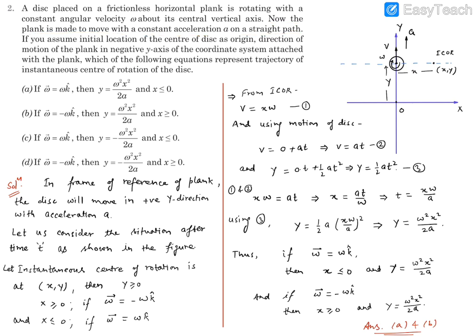If you assume initial location of the center of disc as origin in direction of motion of the plank and the negative y direction of the coordinate system that is attached with the plank, which of the following equations represents trajectory of instantaneous center of rotation of the disc?